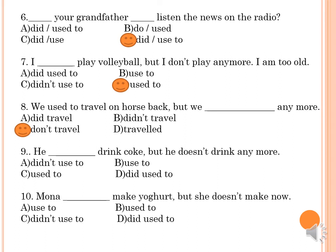Number 9 — He used to drink Coca-Cola. Excellent, well done. Number 10, the last one — Mona used to make yogurt, but she doesn't make it now.